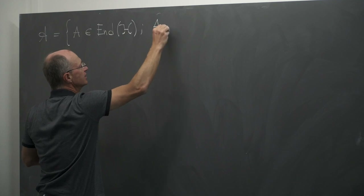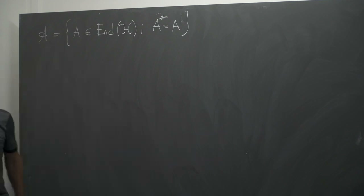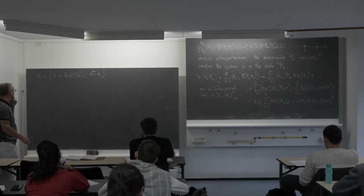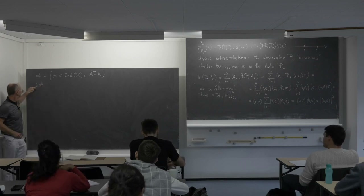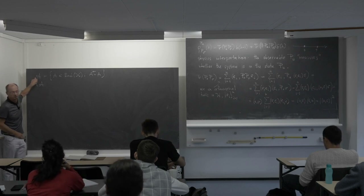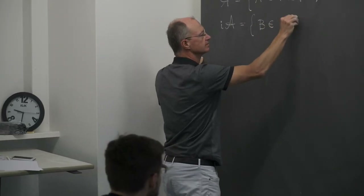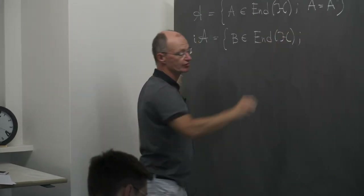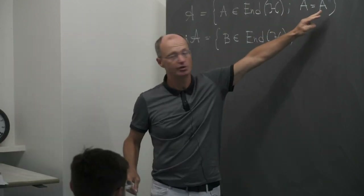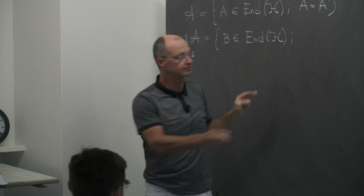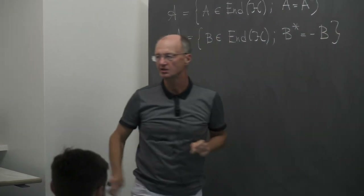Now I want to turn to a more mathematical aspect. Observables A are self-adjoint operators. Let us consider the imaginary unit times that space, i·A. If you multiply self-adjoint operators by the imaginary unit, their self-adjoint property is lost and replaced by the property that they are anti-self-adjoint.